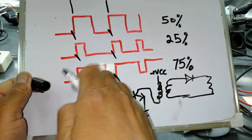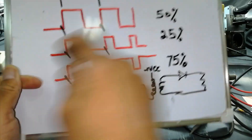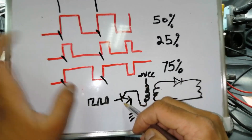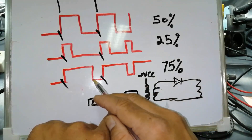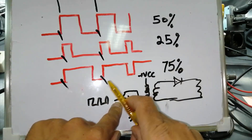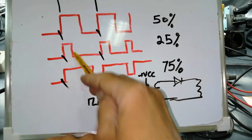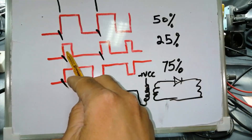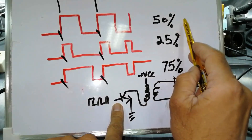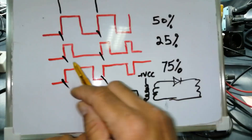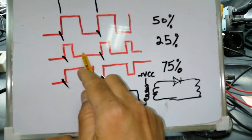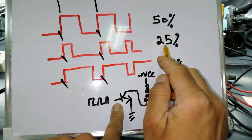The PWM controller allows the transistor to turn on — it controls the switching time of this transistor. If any transistor is working at 50% on time, its duty cycle is 50%. If any circuit is working in the 25% region, then the duty cycle is 25%.